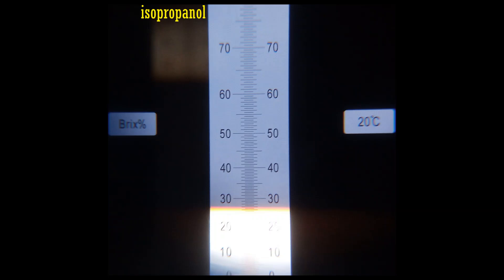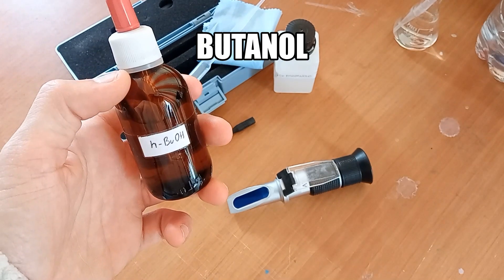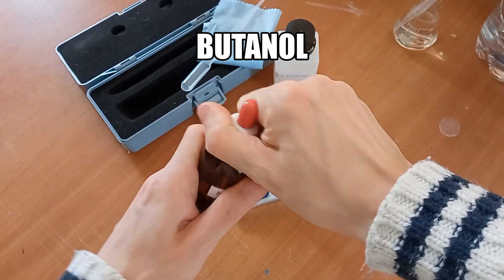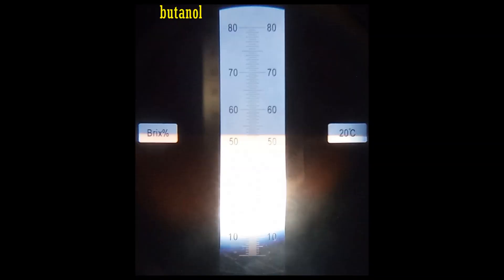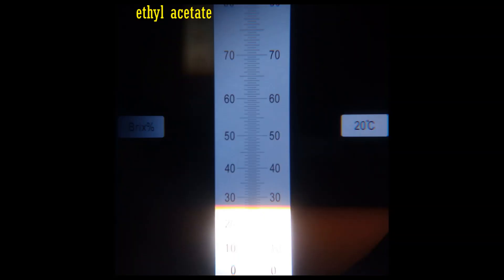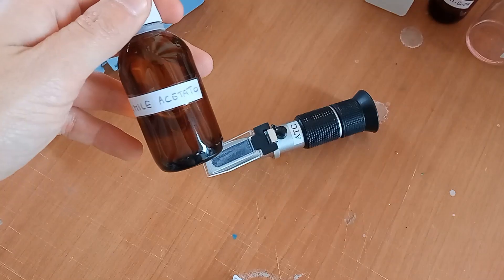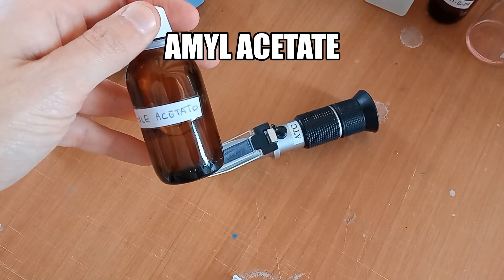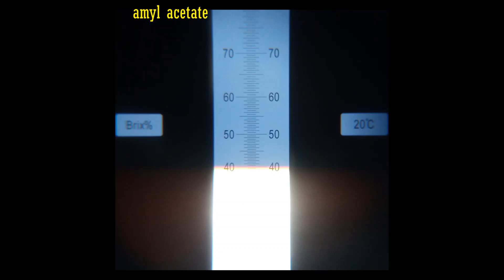Isopropanol gives 26.5 BRIX, butanol 52 BRIX. Let's switch to esters. Ethyl acetate shows a refractive index of 24.5 BRIX, amyl acetate 39.5 BRIX.